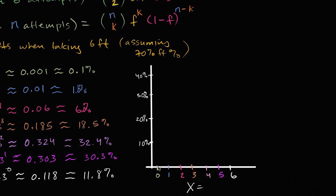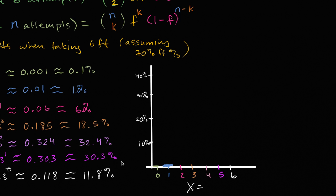So this first one, 0.1% — that's barely going to register on this graph, so I'll just give it a little bit of a showing right over there. Let me do it in green. One percent, as well, is kind of barely a showing, it shows up a little bit more. Two is six percent, which on this scale is going to be about that high. So that is six percent right there.